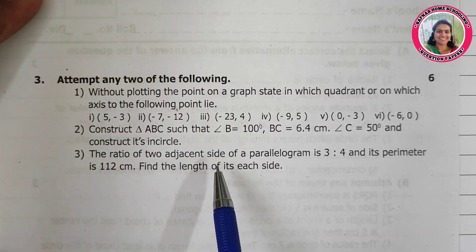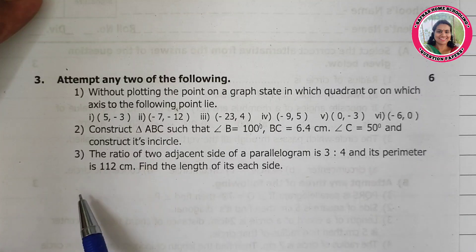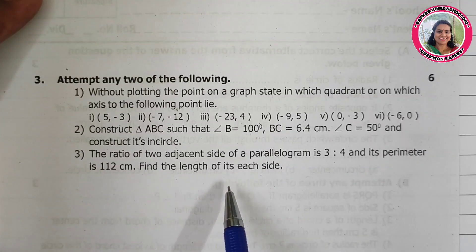The ratio of two adjacent sides of a parallelogram is 3 to 4 and its perimeter is 112 cm. Find the length of each side.